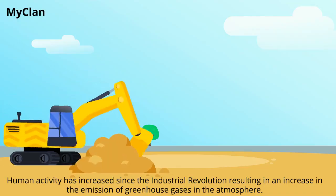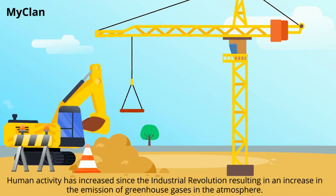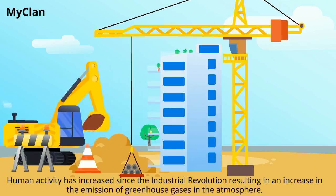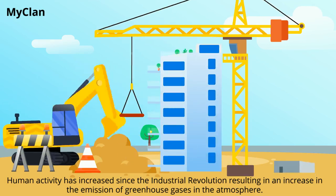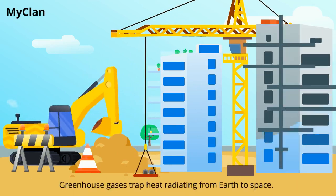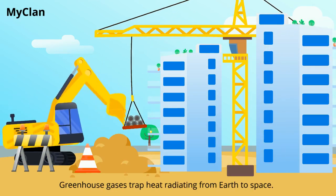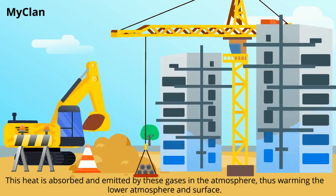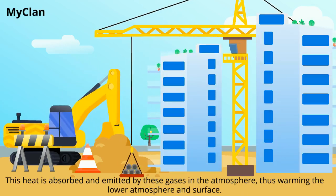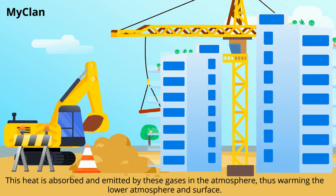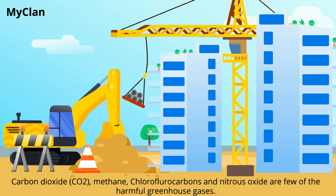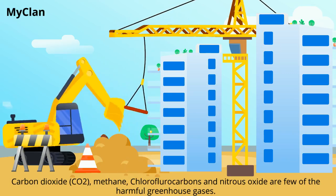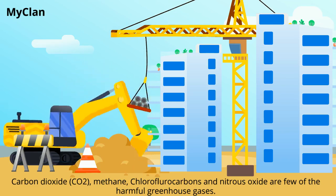Reasons for global warming: human activity has increased since the industrial revolution, resulting in an increase in the emission of greenhouse gases in the atmosphere. Greenhouse gases trap heat radiating from Earth to space. This heat is absorbed and emitted by these gases in the atmosphere, thus warming the lower atmosphere and surface. Carbon dioxide, methane, chlorofluorocarbons, and nitrous oxide are a few of the harmful greenhouse gases.